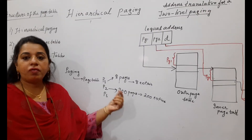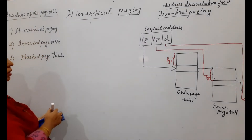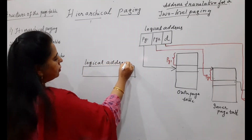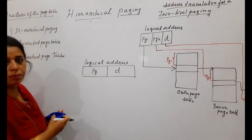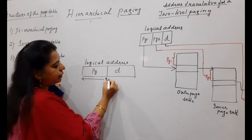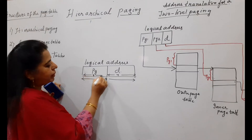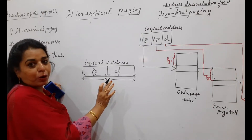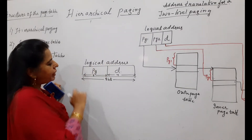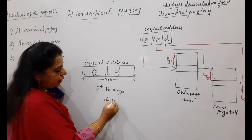The number of pages is determined by the number of bits used to represent the page number. The logical address consists of two components: the page number and the displacement. Suppose eight bits represent the logical address — if four bits represent the displacement and four bits represent the page number, then 2 to the power of 4 is 16 pages, so there will be 16 entries in the page table.